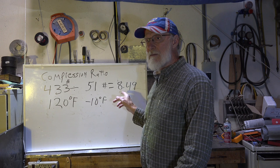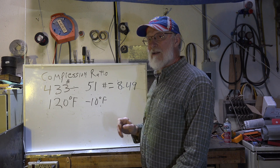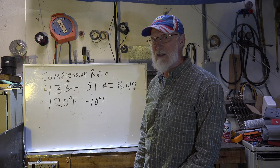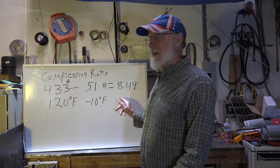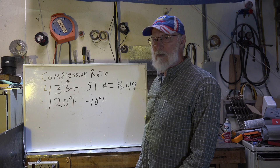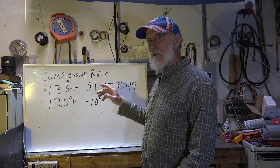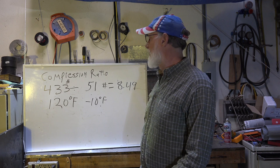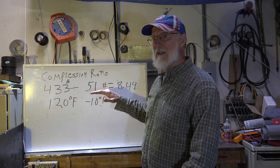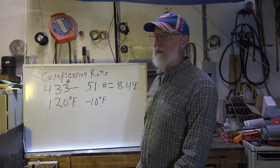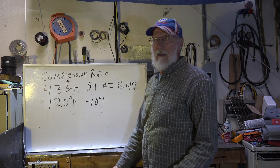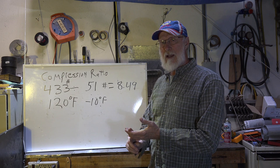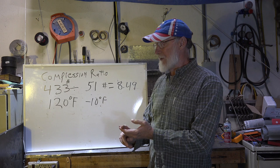The higher the number, the less it pumps. So this is going to be a lot less capacity — that compressor is not going to have anywhere near the capacity it had when we had the higher suction pressure. The reason for that is re-expansion of gas. That high compression ratio is reducing the effective refrigerating effect of the refrigeration system.